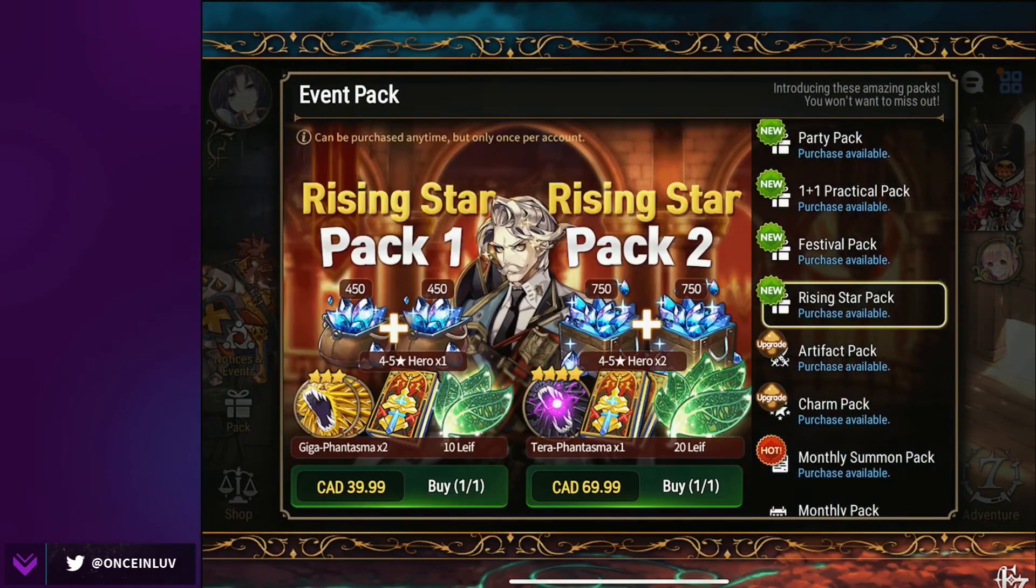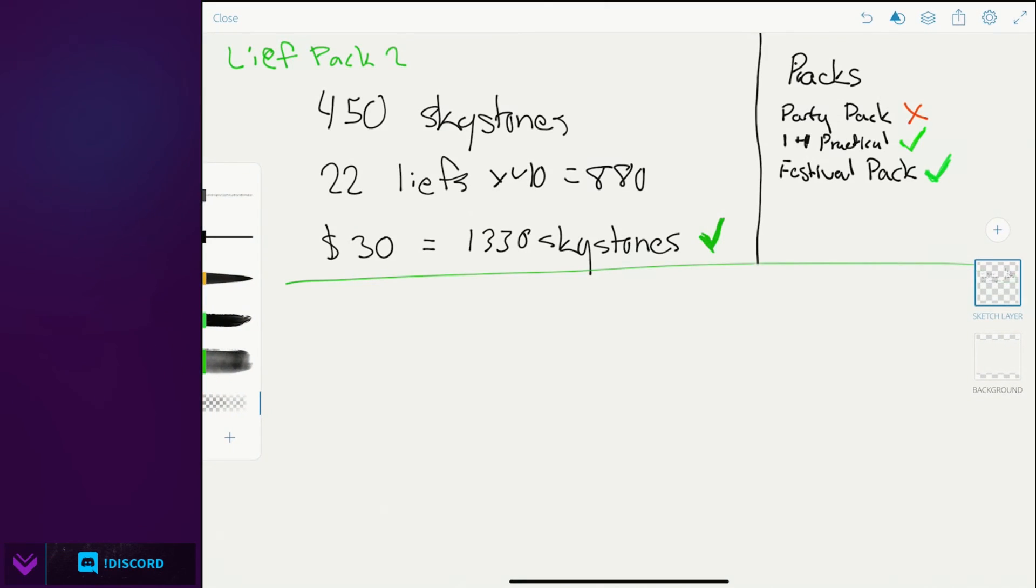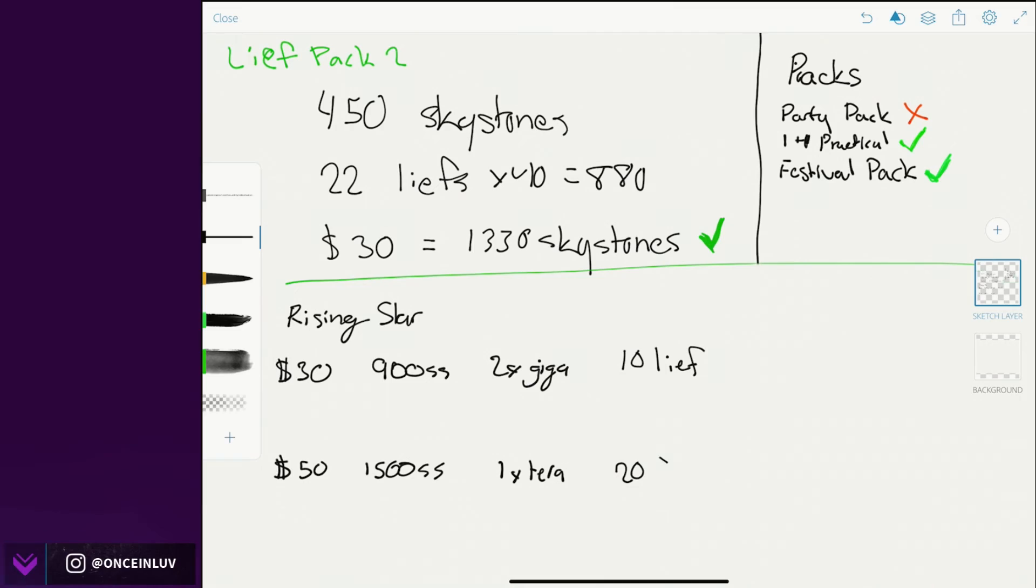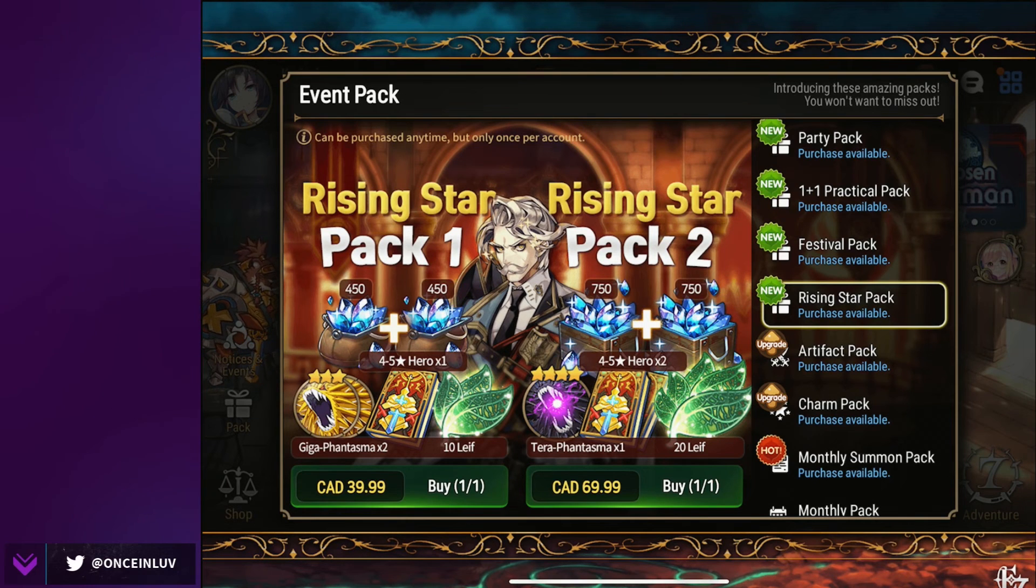And the last pack we have is the rising star pack. So this one's a little bit confusing because there's a lot going on to it. So we have 900 skystones and then 1500 skystones, and 10 and 20 leaves. We have for 30 dollars and for 50 dollars, we have 900 and then 1500 skystones, 2 gigas which are kind of irrelevant in my opinion, 1 tera. They're very good in early game, not super important or relevant later on. We have 10 and 20 leaves, and then it's just the hero tickets. So 900, 1500, 10, 20, and then 1 four/five star hero, and this one is 2 four and five star heroes.